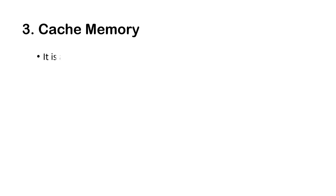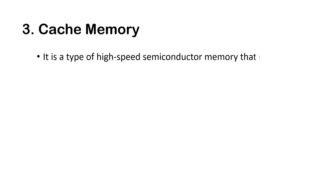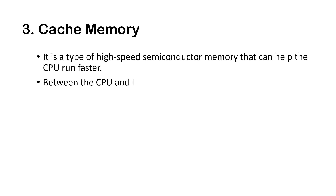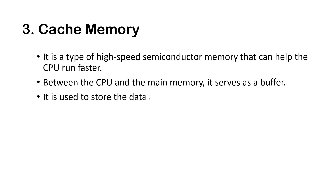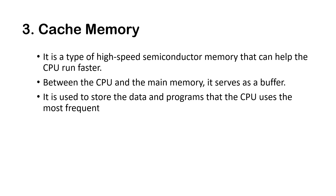Now let's discuss cache memory. It is a type of high-speed semiconductor memory that can help the CPU run faster. It serves as a buffer between the CPU and the main memory. It is used to store the data and programs that the CPU uses most frequently, and it stores data in temporary use.